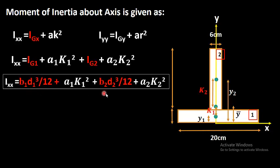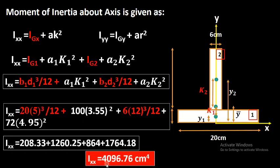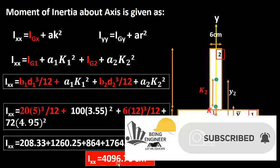By substituting the values — b1 = 20 cm, d1 = 5 cm into bd³ ÷ 12 plus A1·k1², and similarly for figure 2 — we get the final value of Ixx, which is the moment of inertia about the axis parallel to the base passing through the center of gravity of the section. I hope you have understood the topic. For more similar and informative videos, please subscribe to the channel and press the bell icon to get video updates.